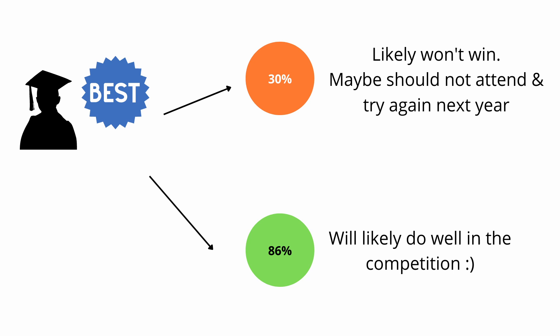On the other hand if your student or model does really well on the test data set like it gets an 86% then the student will likely do well in the competition and you're good to send them off.